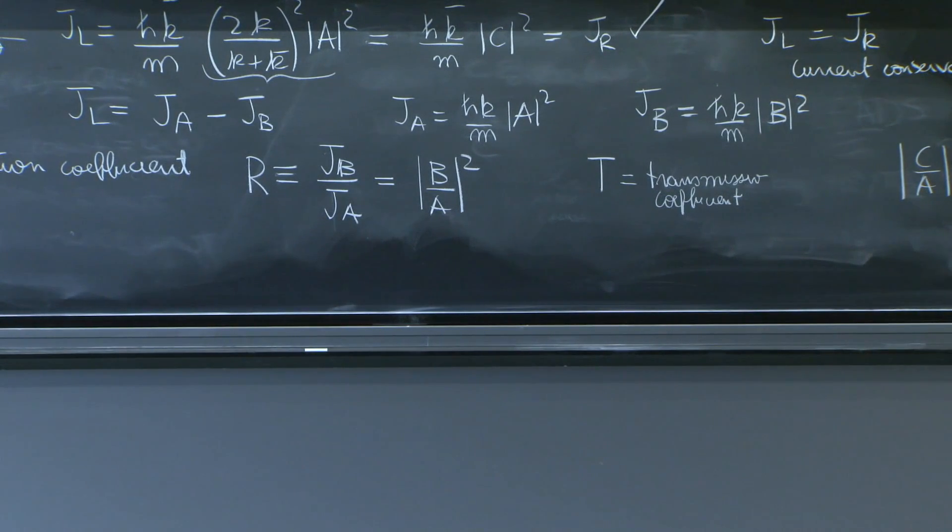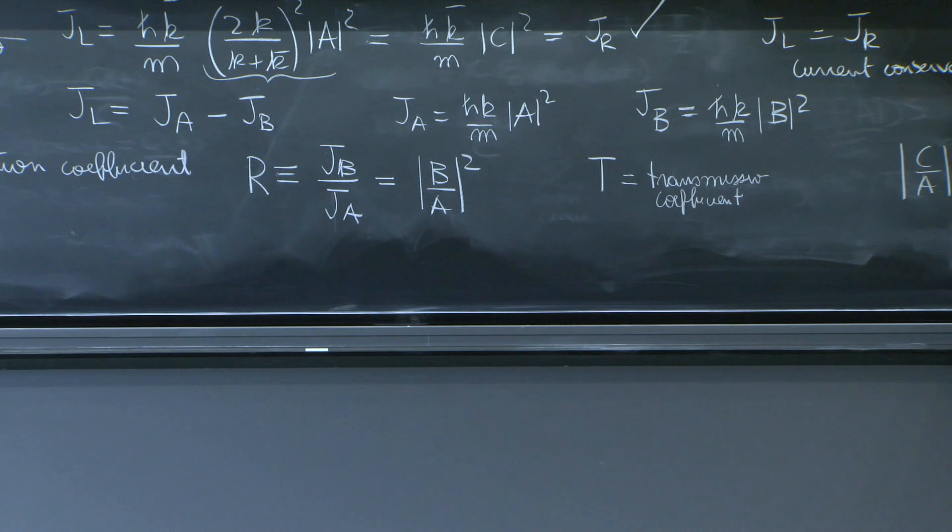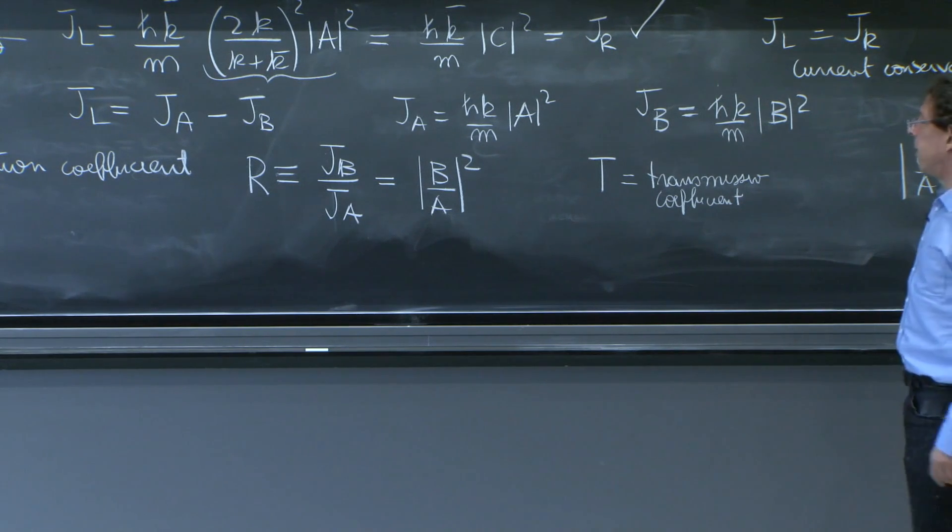But actually, while c over a gives you some idea of how big is the wave to the right compared to the wave to the left, that's not what we should call a reflection coefficient.